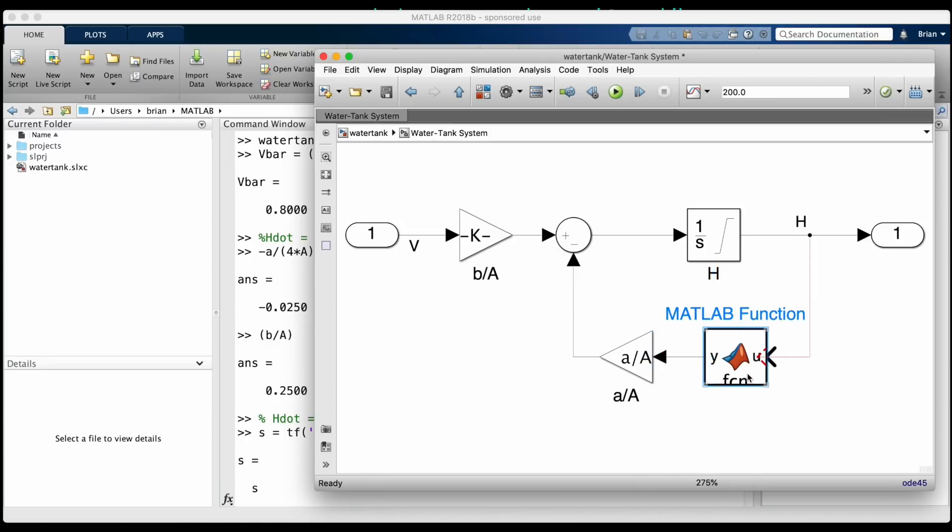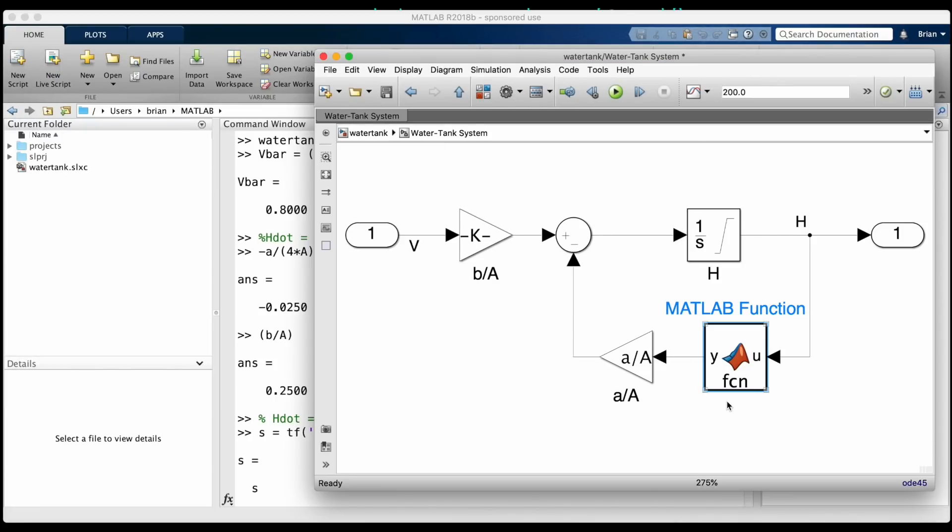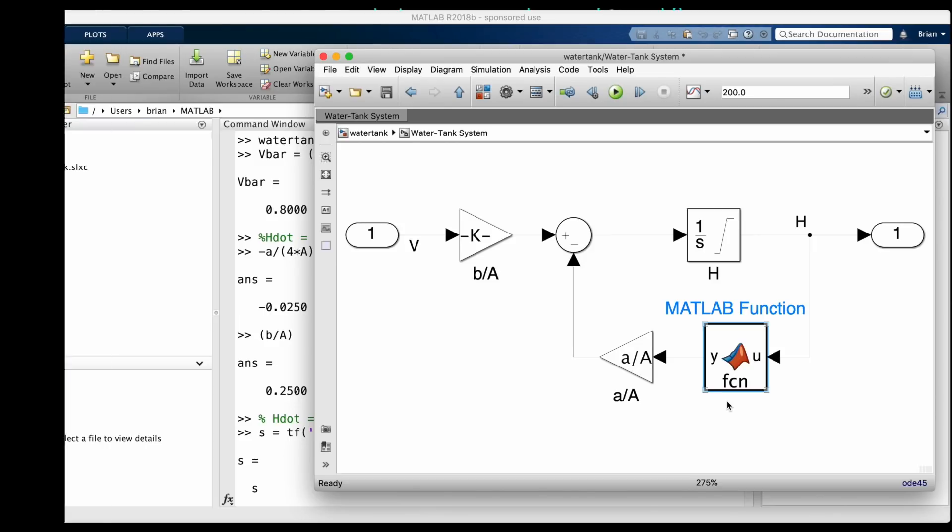For example, instead of using the built-in Simulink block for square root, let's say we wrote our own MATLAB function block that takes the square root of the input. The MATLAB function block doesn't have a Jacobian assigned to it, since what's inside the block can be any arbitrary code. So what happens in this case?